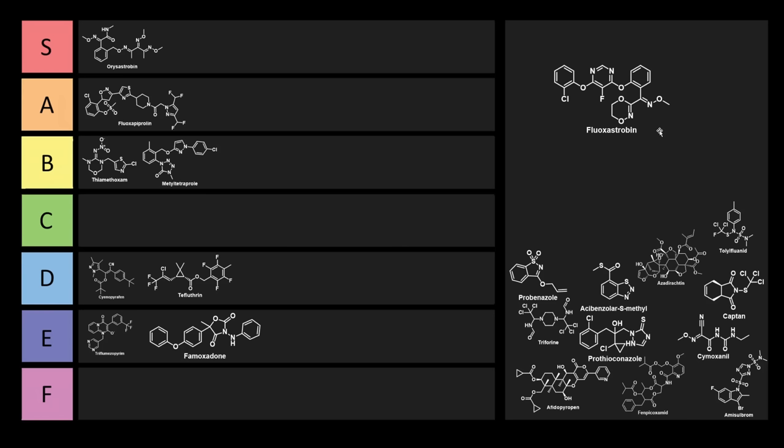Because this is a strobilurin-type fungicidal active ingredient for the control of fungal diseases such as early blight, late blight, leaf spots, leaf rust, and rhizoctonia solani. This has been used on peanuts, tubers, as well as vegetables, more broadly speaking. So this one's pretty cool.